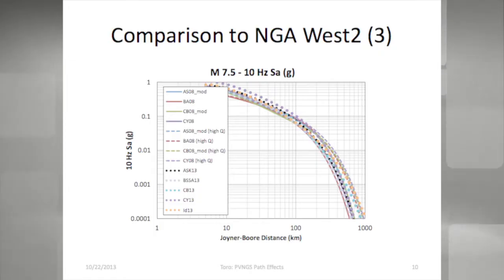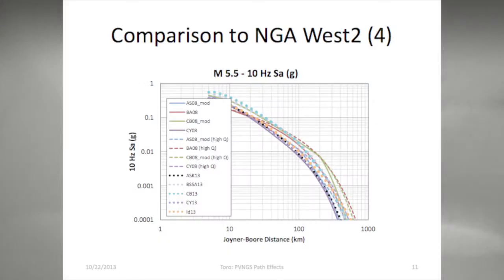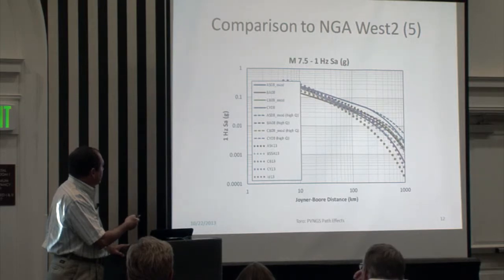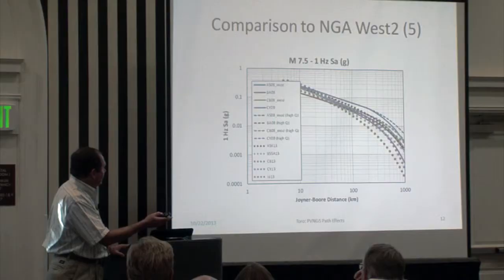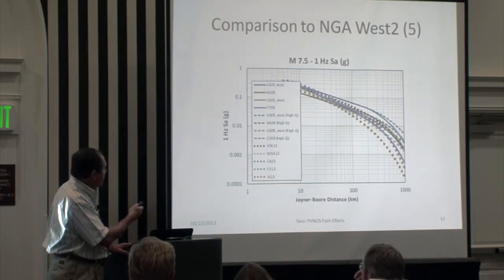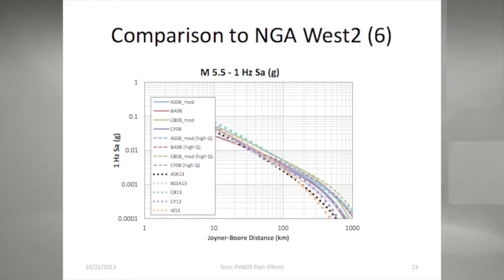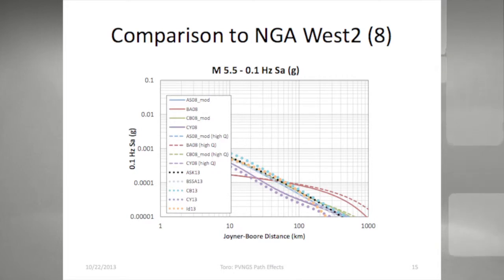For 7.5 at 10 Hz, very good agreement — and not only in terms of the general shape but the spread is very similar. For 5.5 at 10 Hz, same lesson. For 7.5 at 1 Hz, similar but with more spread here because this is one case where it's really the 1 Hz energy that matters, not the integrated form over the entire spectrum. You see a little more spread but in general a good match. For 7.5 at 0.1 Hz, the Idriss model does something funny beyond 300 kilometers, but that doesn't matter. For 5.5 at 0.1 Hz, you don't care, and even there it's not too bad.